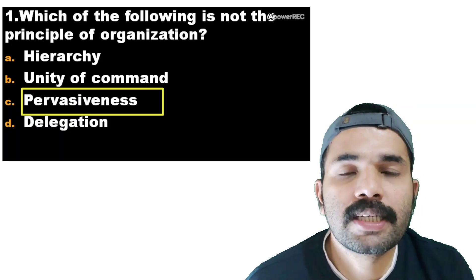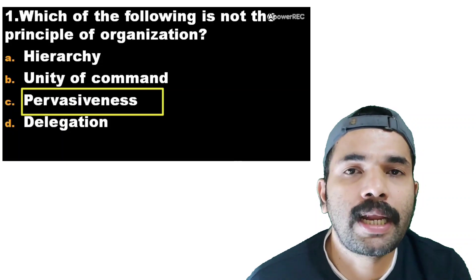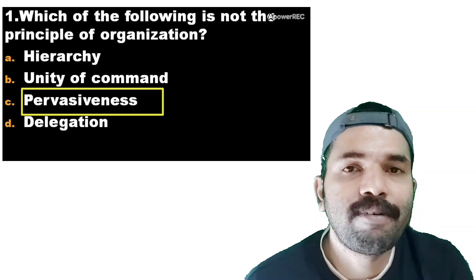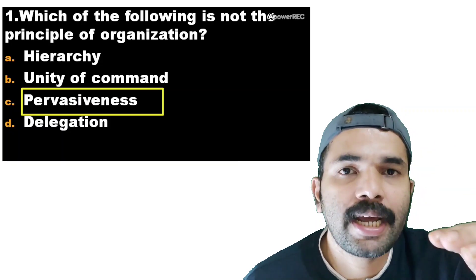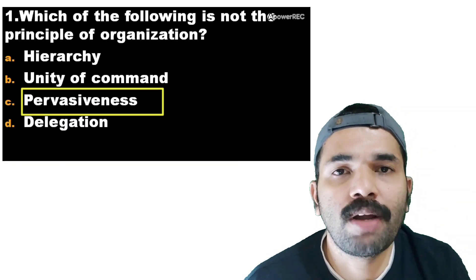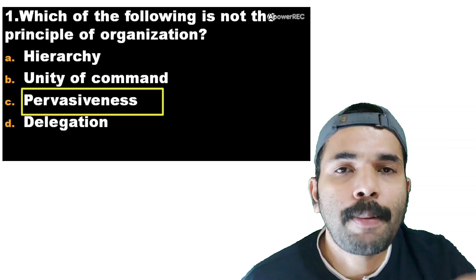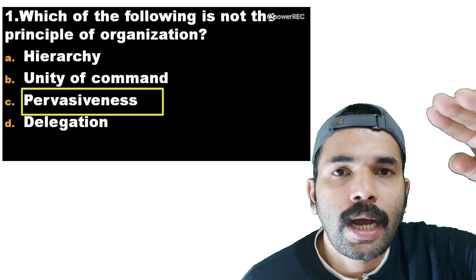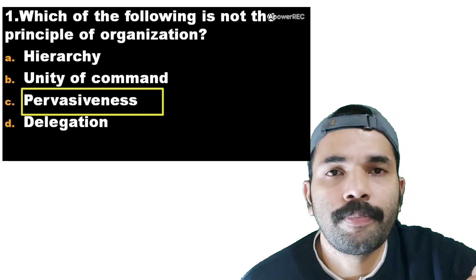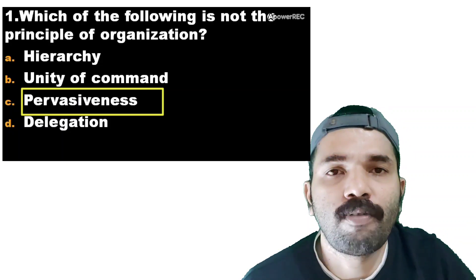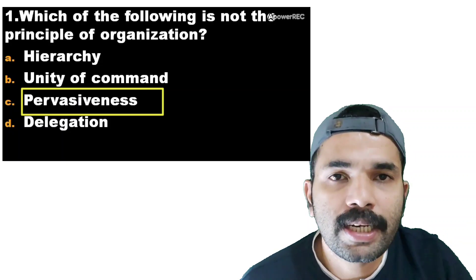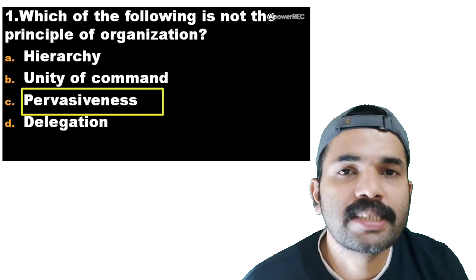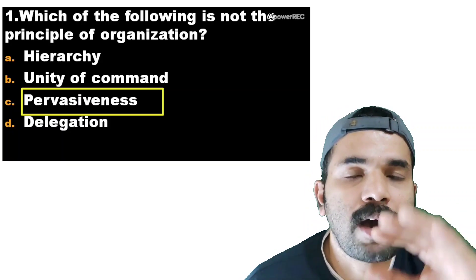In the hierarchy, we have top-level, middle-level, and low-level employees. For example, in a hospital we have the chief nursing officer, assistant nursing superintendent, ward supervisors, team leaders, and staff. That is the hierarchy.